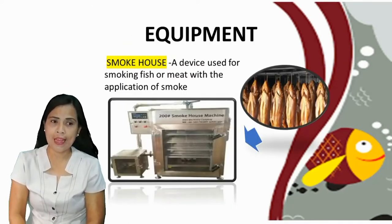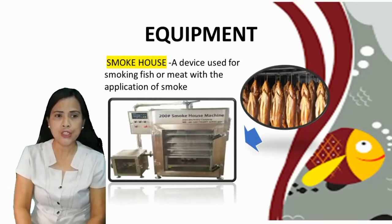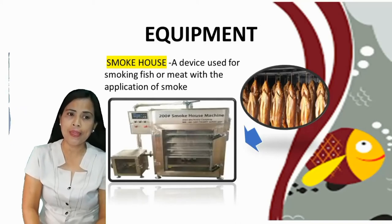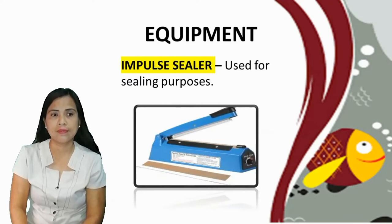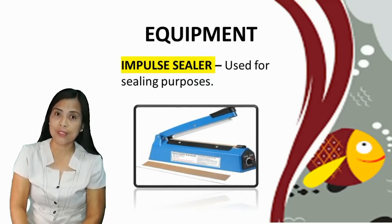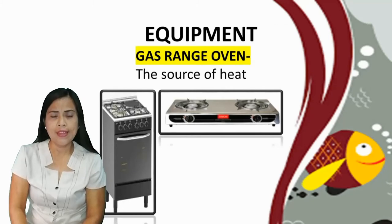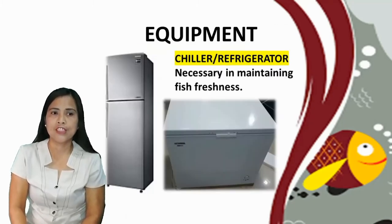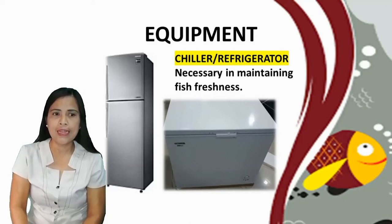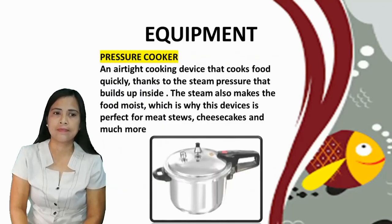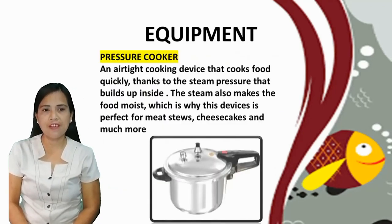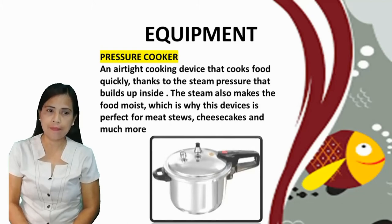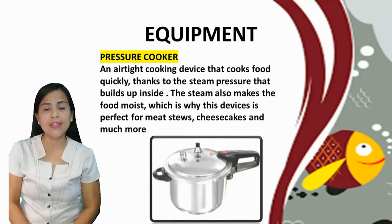Now we have equipment. First, smokehouse: a device used for smoking fish or meat with application of smoke. Also, impulse sealer: used for sealing purposes. Gas range oven: this is the source of heat. Chiller or refrigerator: necessary in maintaining fish freshness. Pressure cooker: an airtight cooking device that cooks food quickly, thanks to the steam pressure that builds up inside. It also makes the food moist, which is why this device is perfect for meat stew, cheesecakes, and much more.